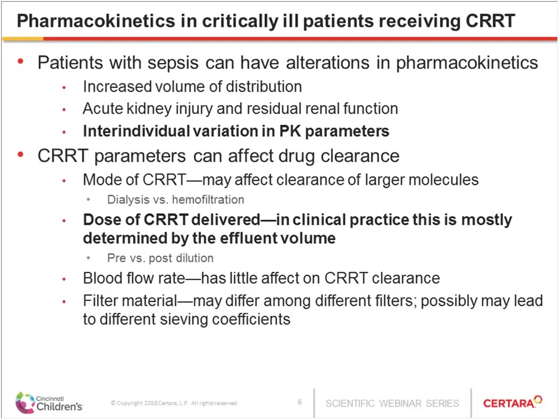The pharmacokinetics of any antibiotic in a critically ill child present challenges. Patients with sepsis can have alterations in PK compared to healthy children — for example, increased volume of distribution due to capillary leak from inflammation or excessive resuscitative fluids. They can also have acute kidney injury affecting clearance of renally cleared drugs, and there is significant inter-individual variation in PK parameters in this population.